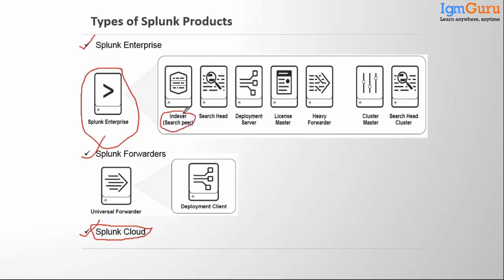The indexer is known as the database. Just like we have MySQL and MongoDB, Splunk has its own database called the indexer. The search head is the UI part — the graphical user interface where we write queries and get results. That is known as the search head.